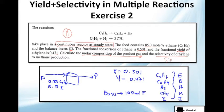They ask you to calculate molar composition of the product gas. So, what's going out. And this is selectivity of ethylene to methane. Because we are going to understand and use yield and we are going to calculate selectivity.